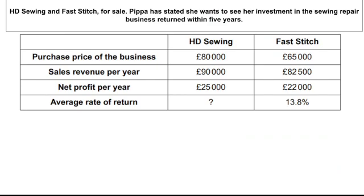This was from a past paper — HD Sewing and Fast Stitch. They've actually given you the average rate of return for Fast Stitch, but not for HD Sewing. If you were in a situation like this, you could actually use Fast Stitch to understand how they achieved their 18.8%, and use the same approach to work out HD Sewing's average rate of return. But how did they get 13.8%? Well, they ignored sales revenue because that's not needed — that's extra information there to test your understanding.